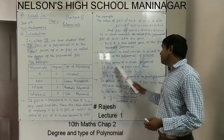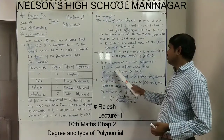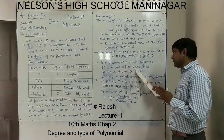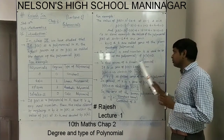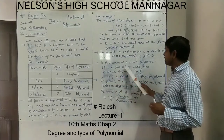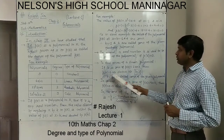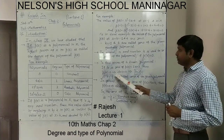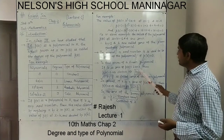Now let us find the zero of a linear polynomial. For example, p(x) equals 2x plus 3. If k is the zero of the polynomial, we know that p(k) equals 0. By the definition, wherever x appears we replace it with k: 2k plus 3 equals 0. That implies 2k equals minus 3, so k equals minus 3 by 2. So the zero of this polynomial is minus 3 over 2.